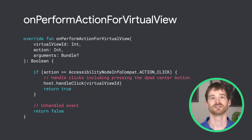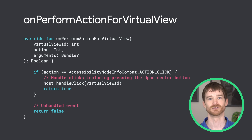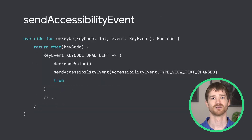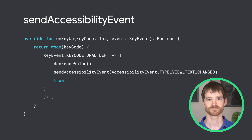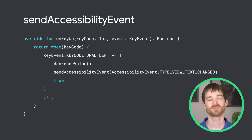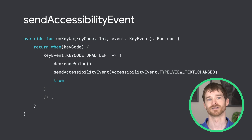Finally, there's the onPerformActionForVirtualView method. This method is called whenever an action that you specified in onPopulateNodeForVirtualView is performed. The populate method specifies what actions can be handled, and this method is for handling the action when it happens. In most cases, this will involve triggering a method on the view. When your custom view changes, you should send an accessibility event to notify the system of the change. For example, imagine you have a custom slider that lets the user control playback speed — pressing left on the D-pad decreases the speed and updates the UI. If the code handling the keypress is in the view class, it can directly call sendAccessibilityEvent. Code in other places can use the accessibility manager's sendAccessibilityEvent.